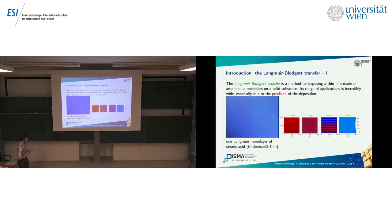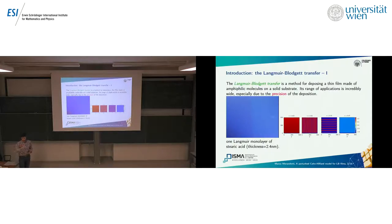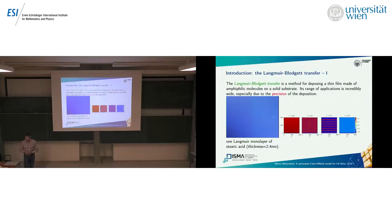These molecules are basically the main components of cell membranes in our body. The reason these thin films are so popular is because the manufacturing process makes it possible to obtain them with a very high level of precision. This picture shows one monolayer of this thin film made of amphiphilic molecules, and they can also exhibit interesting geometrical striping and patterning.